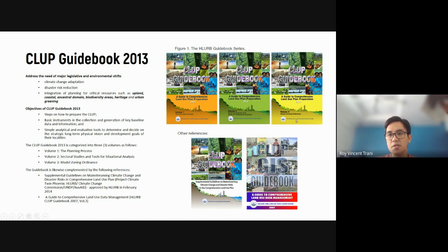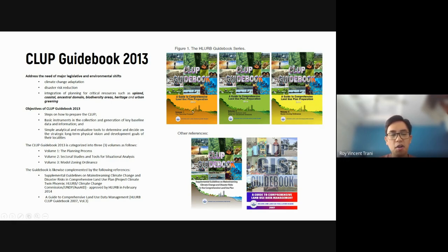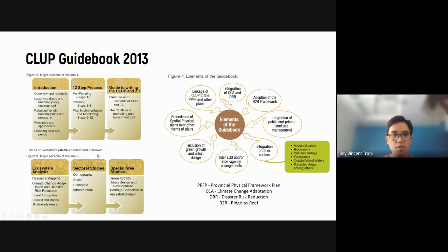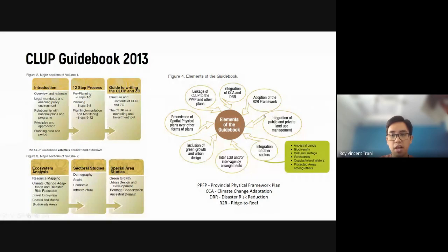Volume three is the model zoning ordinance. Once the CLUP has been approved and you need to do further analysis, you use volume two. When you apply it to become an ordinance or law, you apply volume three. CLUP volume one is already over 200 pages, so we'll focus on the planning process in the Philippines. There is a 12-step planning process divided into three phases: a pre-planning phase, the actual planning phase, and plan implementation and monitoring. For this subject, MUD201N, we're really focusing on the planning steps.